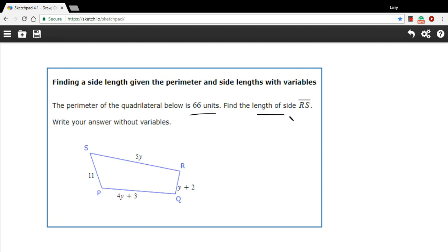It says we want to find the length of side RS. Well, RS, they're telling us, is 5y. So we want to find out what 5y equals. Well, first, to do that, we need to know what y is.